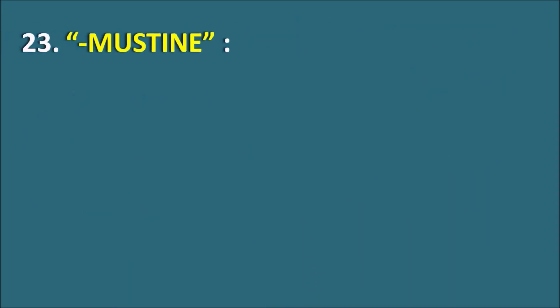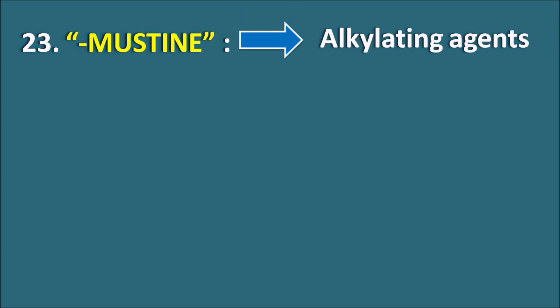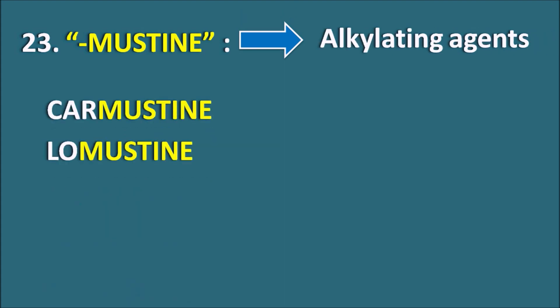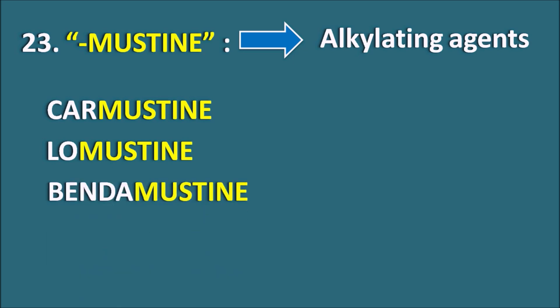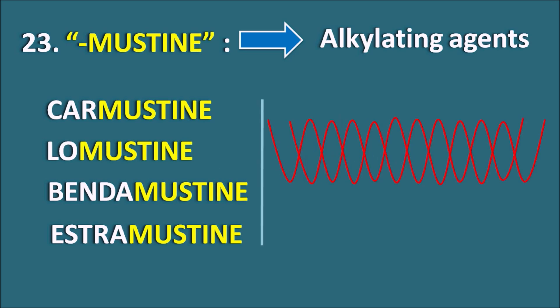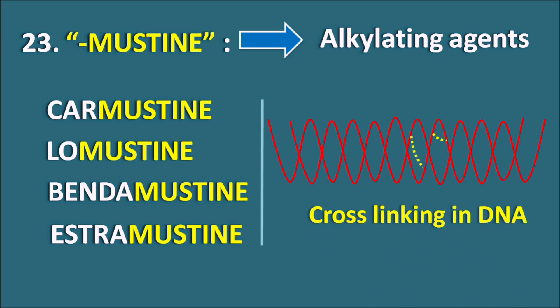The 23rd suffix is Mustine. Mustine indicates they are alkylating agents. We have drugs like Carmustine and Lomustine, which are nitrosoureas, and Bendamustine and Estramustine, which are nitrogen mustards. All have the suffix Mustine indicating they are alkylating agents. These drugs act on DNA and produce inter or intra strand cross-linkage, which inhibits the movement of DNA polymerase enzyme, thereby inhibiting DNA replication and cell proliferation.